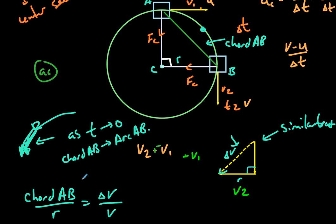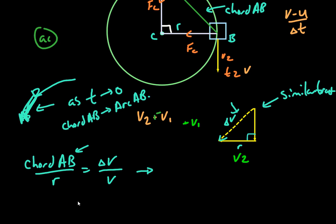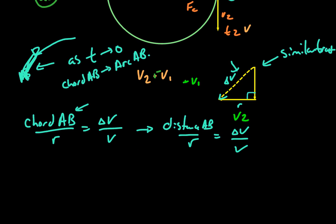So what we're going to do is, since we're not dealing with arc directly, but if we make this time small enough, we can say that we're dealing with arc. So what we can say then is, we can say then that the distance AB over R, right? That's the distance, is equal to delta V over V. And then we know that distance is equal to velocity times time, so we can then say this. V times my time interval over R is equal to delta V over V.